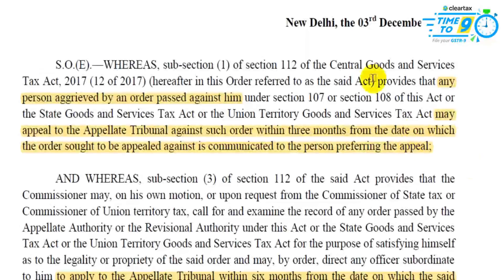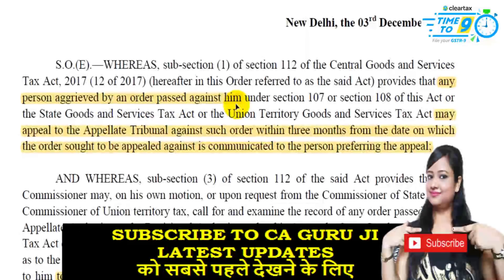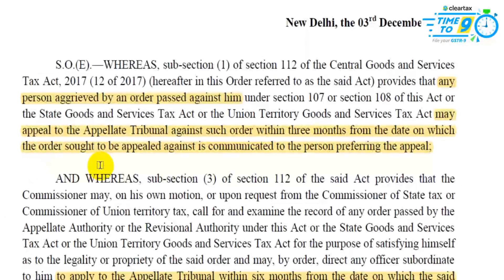In the first paragraph, the Central Goods and Service Tax Act 2017, Section 112, Subsection 1 states: any person aggrieved by an order passed against him under Section 107 and Section 108 of this Act, or the State GST or Union Territory GST Act, may appeal to the tribunal against such order within three months from the date on which the order sought to be appealed against is communicated to the person.